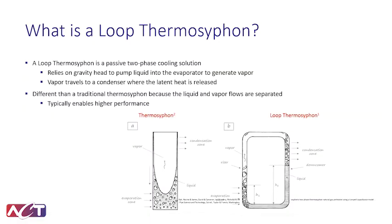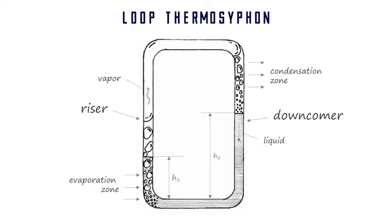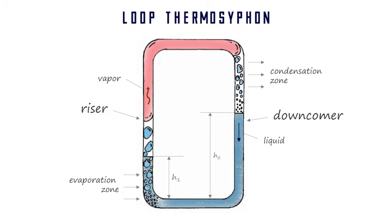A loop thermosiphon operates on the same principles, but we separate the liquid and vapor flows in more of a loop fashion, as the name suggests. If you look on the right side image, we utilize the height of the liquid to drive the loop. This pressure head pushes liquid into the evaporator section. You boil all the liquid in the evaporator and it creates voids inside of the flow. Those voids reduce the density of the fluid and that allows the liquid to displace the flow all the way around the loop. The two-phase mixture travels up to a condenser where you can remove some heat, condense the liquid back to its form, and then it falls into a liquid column to continue the loop.